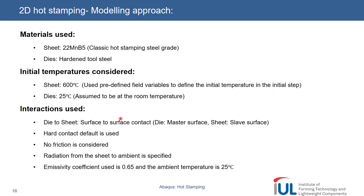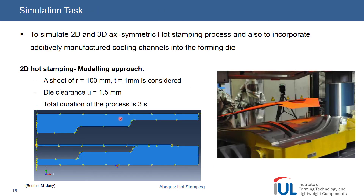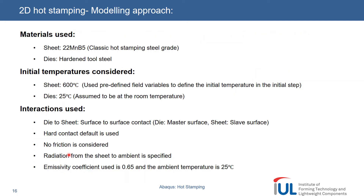The sheet starts at 600°C, defined through a user-defined field variable for the initial temperature at the beginning of the step. The ambient temperature is 25°C — meaning the process takes place in an air environment. In the gaps between the die and the sheet we assume air, and we don't include any gases forming during the process actively or passively.